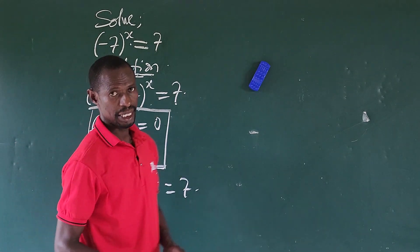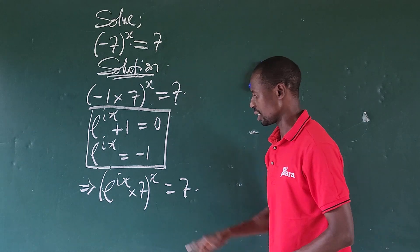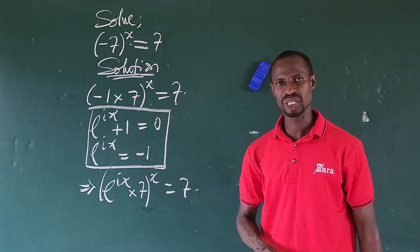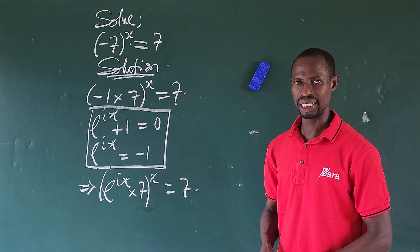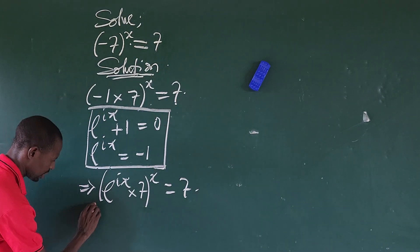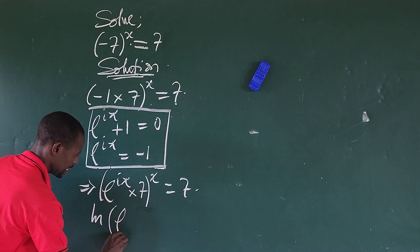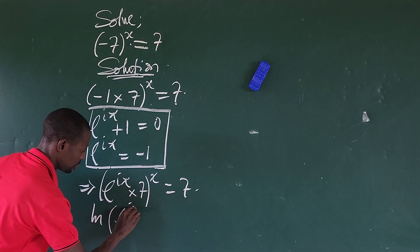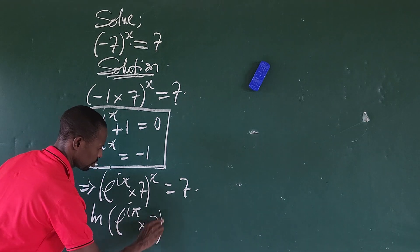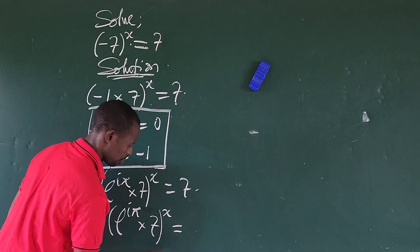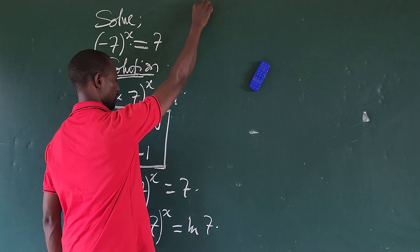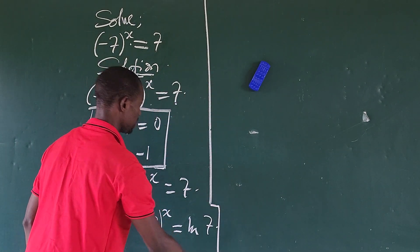The next thing we do is take the natural log of both sides of the equation. I prefer using ln. Applying ln to both sides gives us: ln of bracket e^(iπ) times seven to the power of x, equals ln of seven.